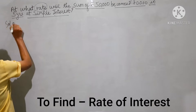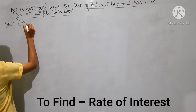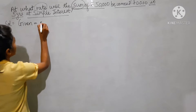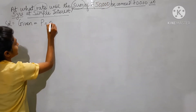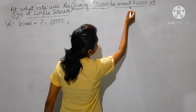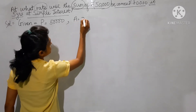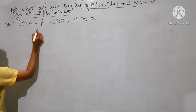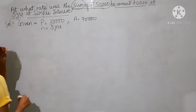Now what is given in this example? Note down. Given: sum means principal, P is equals to 50,000. Next, they have given 'becomes rupees 70,000', means amount A is equals to 70,000. In five years means n is how much? Five years.